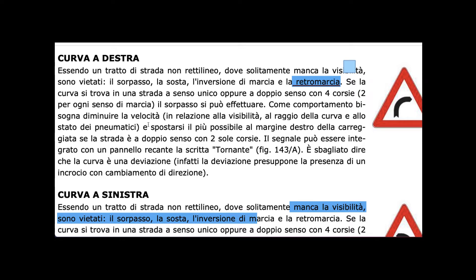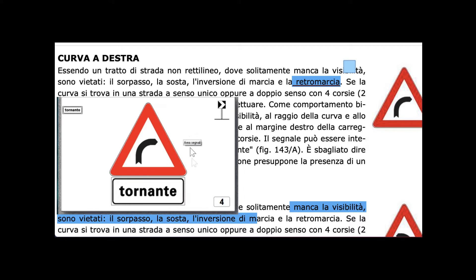The most important comportment is to reduce our velocity — 'diminuire la velocità' — in relation to the visibility, the radius of the curve, and the state of the tires. If our tires are consumed, we don't have good 'adherenza' or grip on the ground, so reducing velocity is the most important thing in curves. The sign can also be integrated with a panel bearing the word 'tornante'.